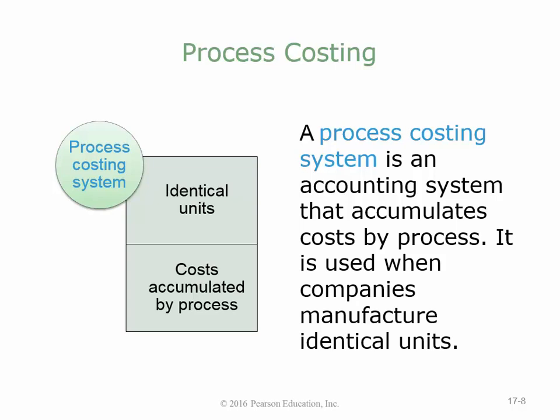Coca-Cola Bottling Company might use process costing — they produce millions of identical bottles and can just divide total cost by units to get an average cost per unit. But with a custom knife, you have to track exactly how much steel, deer antler, and other materials went into it, because you're selling it on that basis.